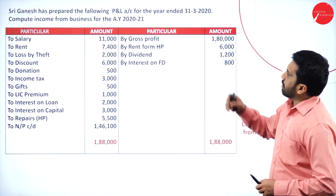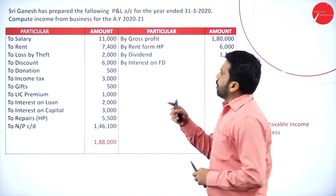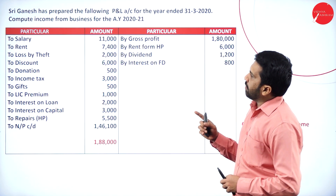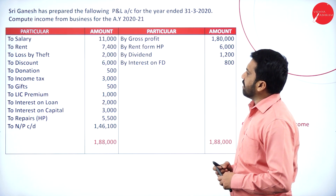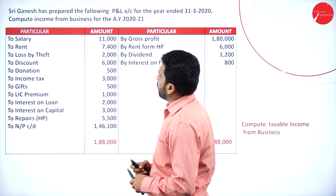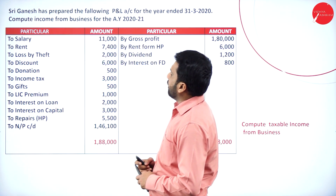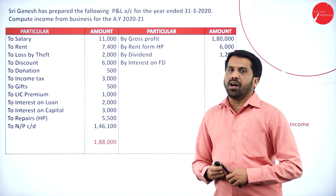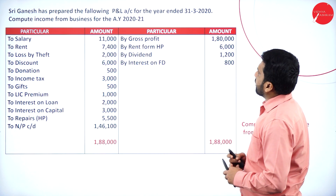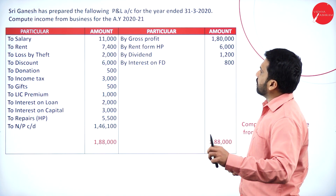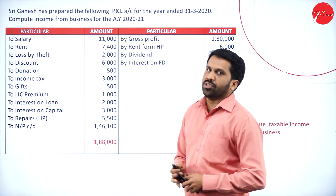In this, we have particular amounts on both sides. On the debit side we have: salary, rent, loss by theft, discount, donation, income tax, gift, LIC premium, interest on loan, interest on capital, repairs, and net profit carried down. On the credit side we have: gross profit, rent, dividend, and interest on FD.